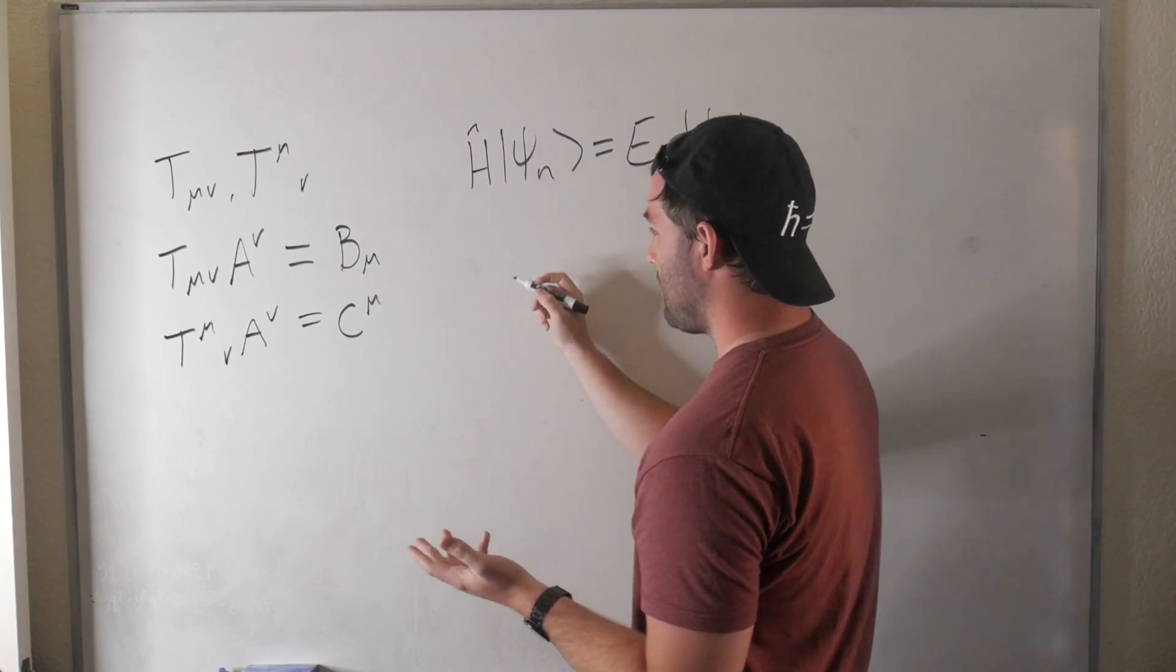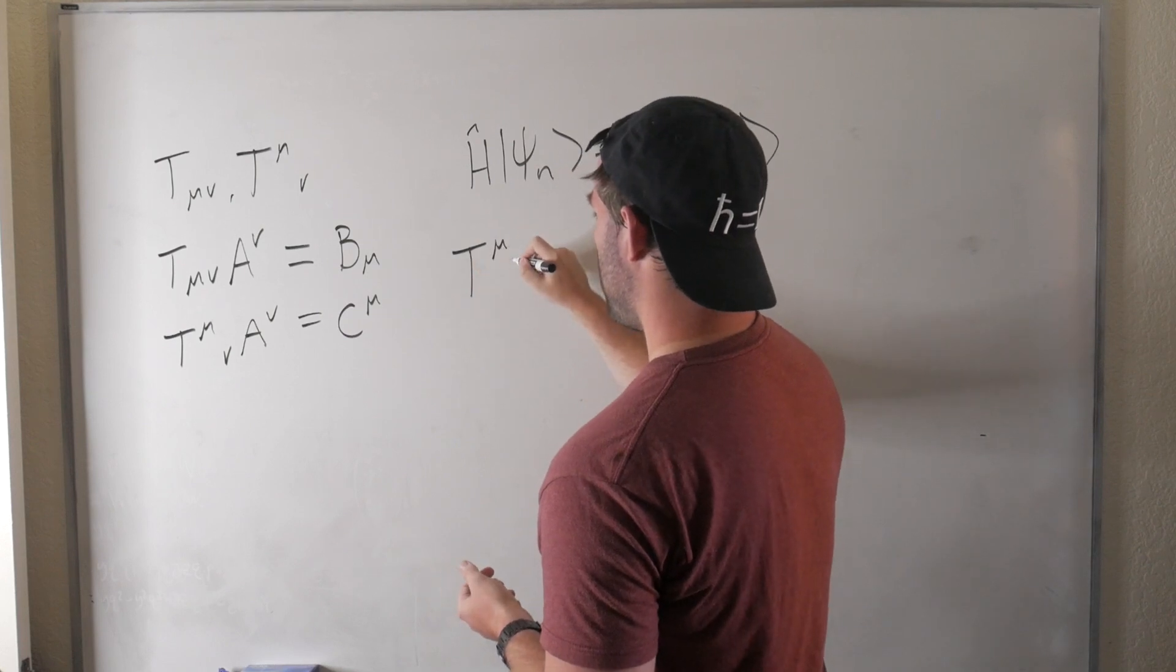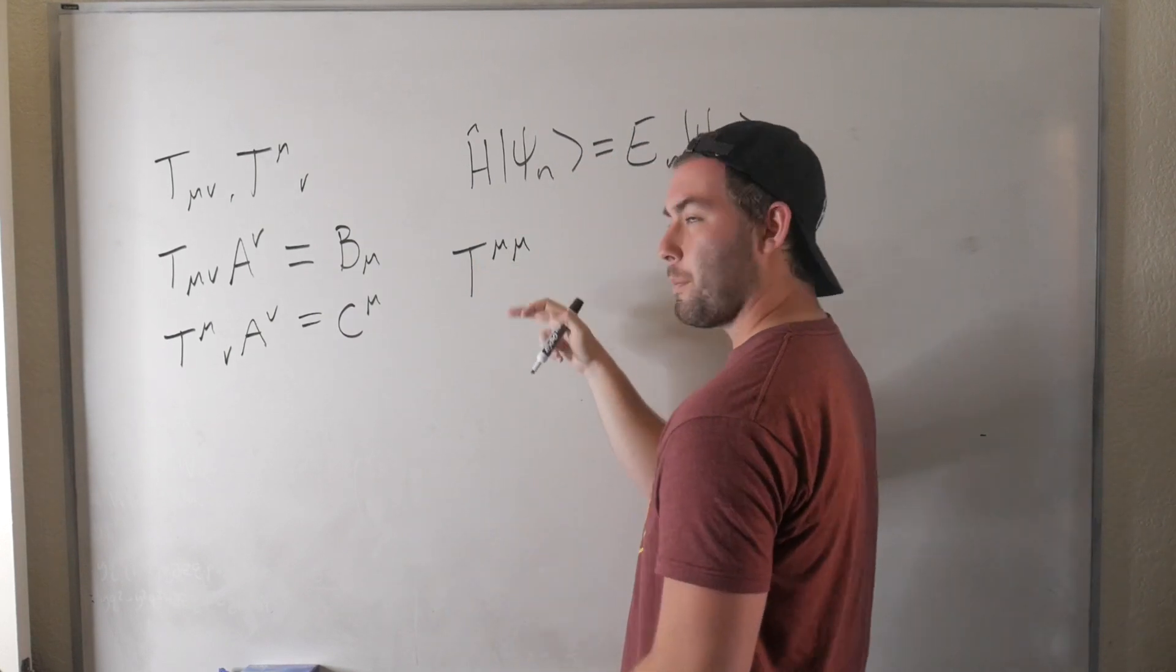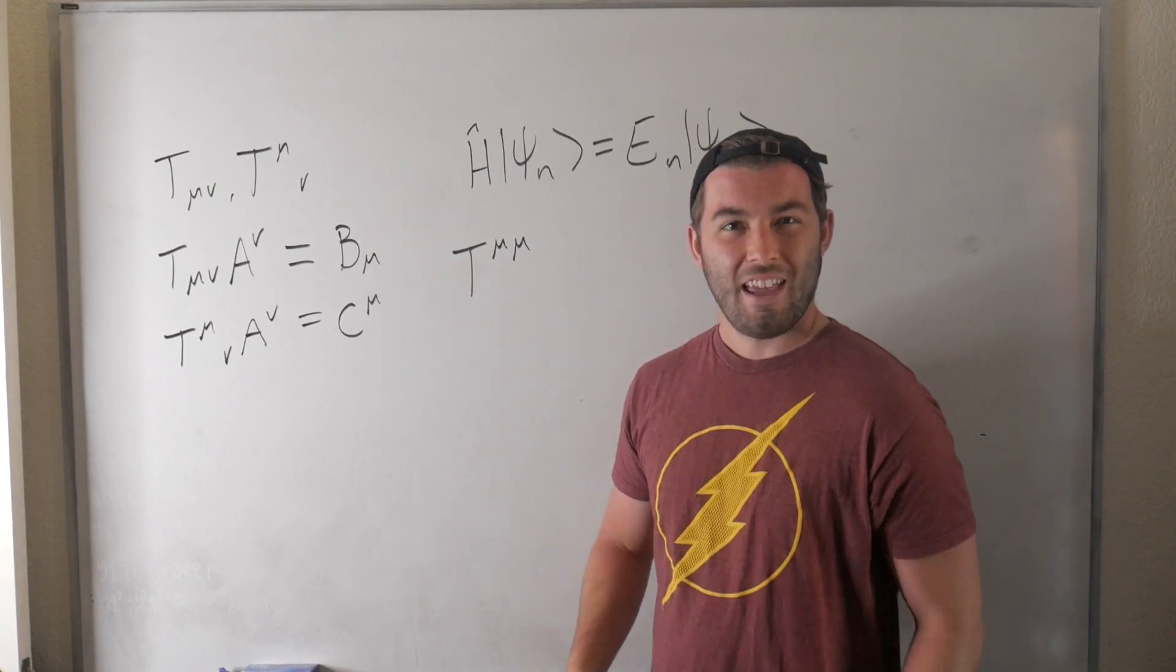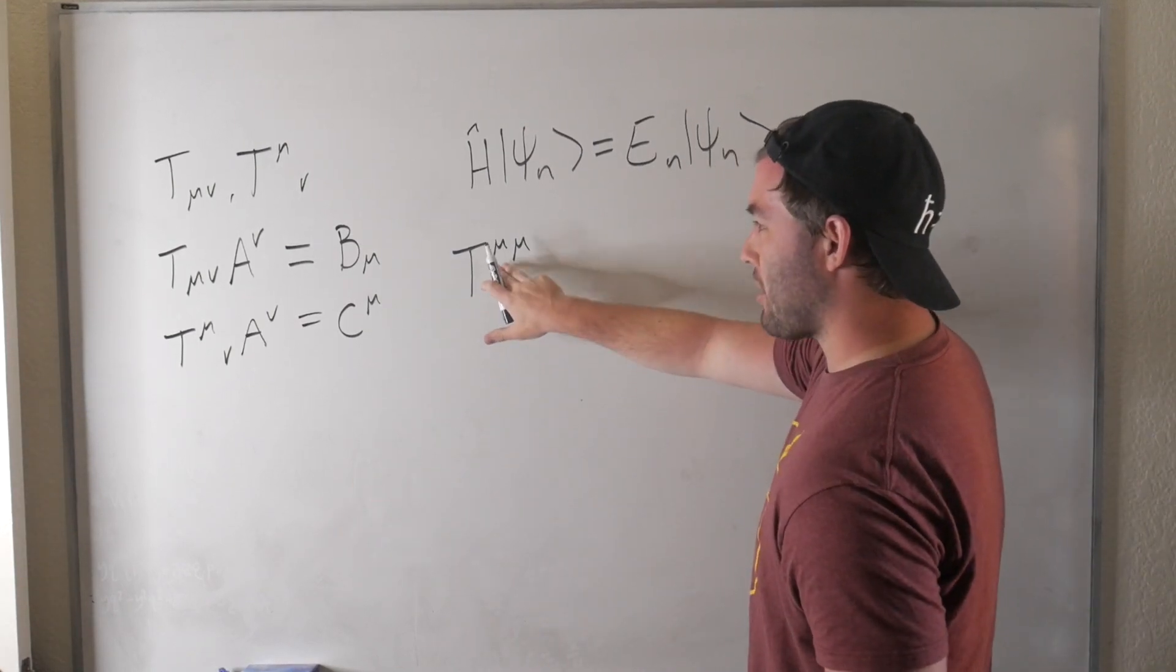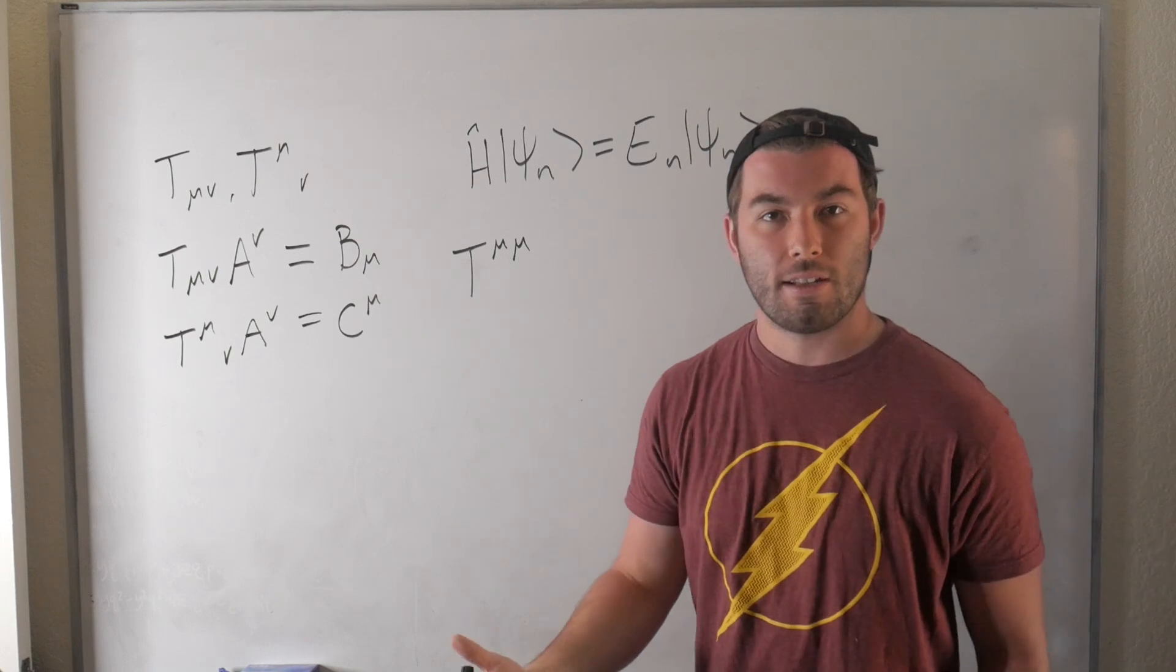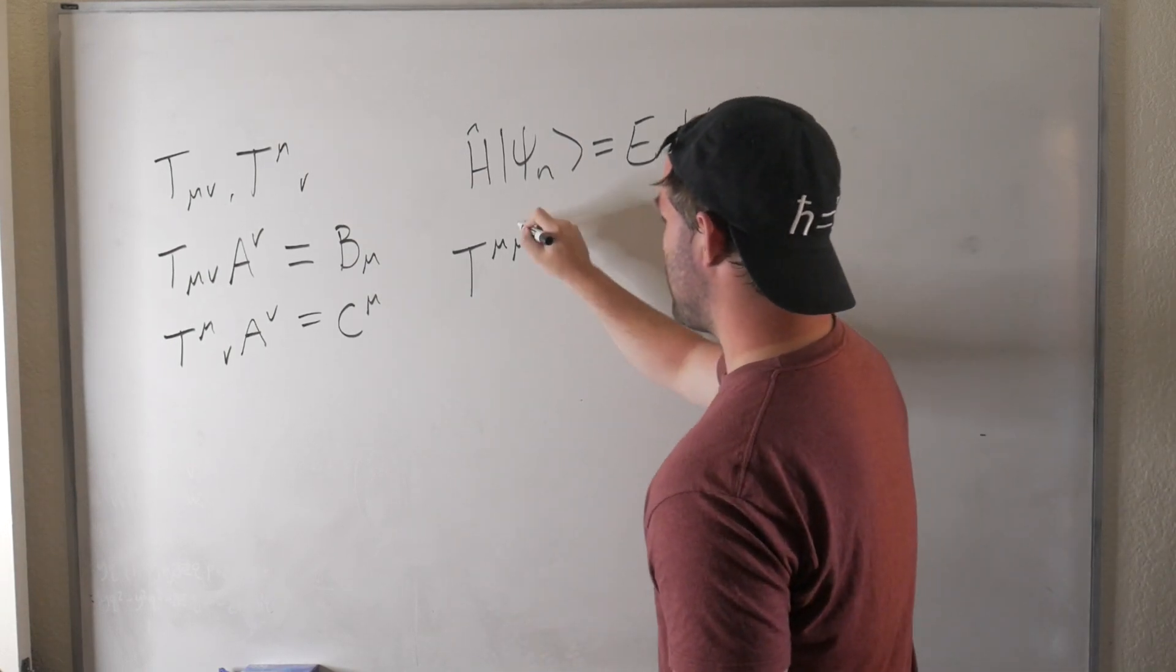So for this whole reason, you don't ever see something like T^μ_μ, which whenever you see the repeated indices on the same tensor, that means that you're taking a trace. And you don't take traces of, say, doubly contravariant or doubly covariant tensors, because as we just said, it doesn't make sense.